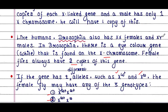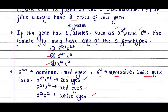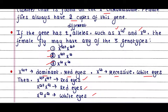Female flies always have two copies of the white eye color gene. If the gene has two different alleles such as Xw+ and Xw, the female fly may have any of three genotypes: Xw+Xw+, Xw+Xw, or XwXw. Xw+ is the dominant allele and it shows red eyes.